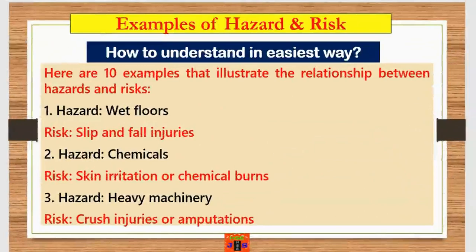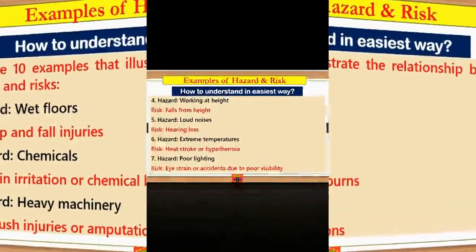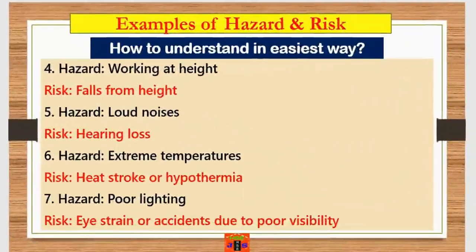Chemicals are a hazard — the risk is skin irritation or chemical burns. A third example of a hazard is heavy machinery, where the risks are crushing injuries or amputations. Example four: working at height is a hazard, and the risk is falls from height.